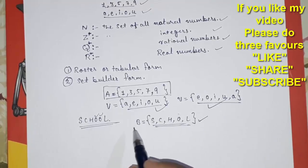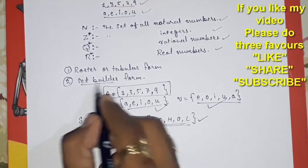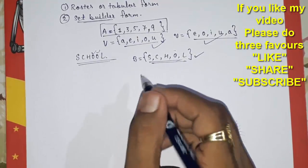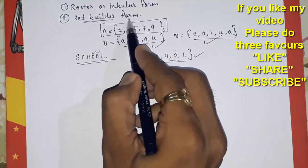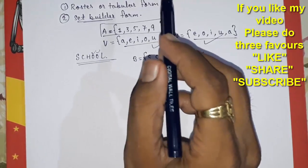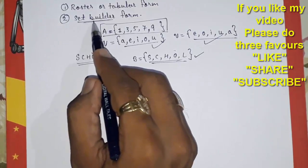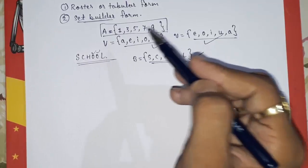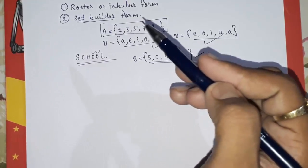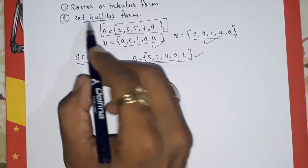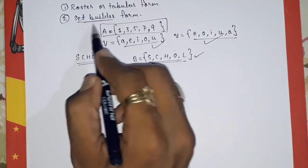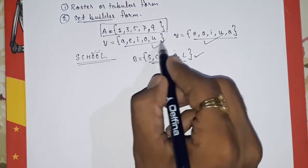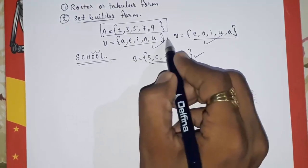Now we are going to study Set Builder form. You have to keep in mind that we cannot represent all sets in Set Builder form — only collections that have some ordered pattern or similarities can be written this way. For example, A, E, I, O, U can be represented because all these are vowels.